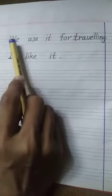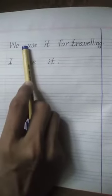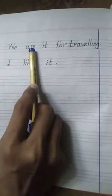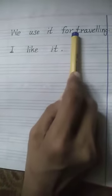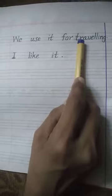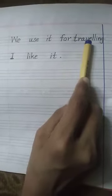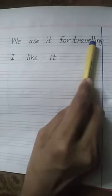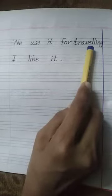We: W-E. Use: U-S-E. It: I-T. For: F-O-R. Traveling: T-R-A-V-E-double L-I-N-G. Let's repeat the spelling of traveling again: T-R-A-V-E-double L-I-N-G.